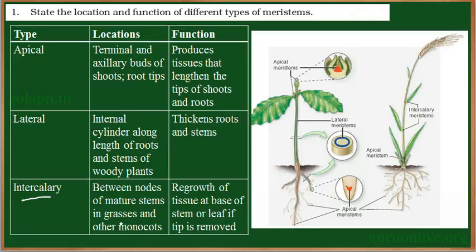The last kind are called intercalary meristems, generally found in grasses and monocots. They are found near the end of the leaf plates and help in the regrowth of the base of the stem. For example, when cows graze on grasses, the leaf regrows due to intercalary meristems. They are generally found in grasses and certain herbs.